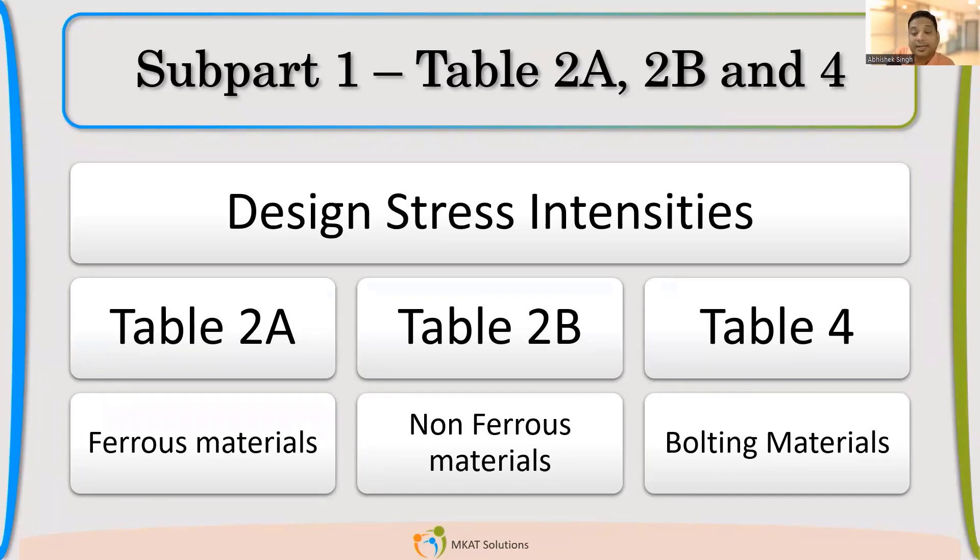So if you refer like 2A is applicable for what? It is applicable for Section 3. So if you refer there, you will find the allowable stress is given as design stress intensities. That is not allowable. So different terminology has been used. So accordingly, this table also mentioned these different names for that.